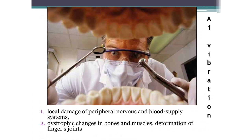Vibration, like ultrasound, damages the peripheral nervous system and circulatory system. Under the influence of vibration, dystrophic changes occur in bones and muscles, and joints are deformed. Dentists most often encounter vibration in their work. Preventive measures are the same as when exposed to ultrasound: gloves, breaks during work, massage, hot water and exercise.